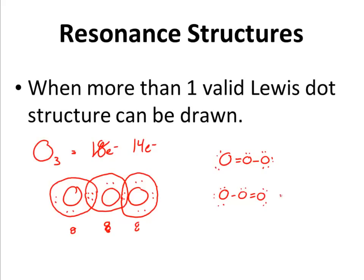So I want you to see, either one of these Lewis dot structures is valid. Both of them work, and therefore they are considered resonance structures. Because more than one valid Lewis dot structure can be drawn for that molecule.